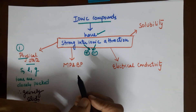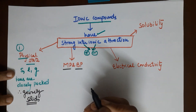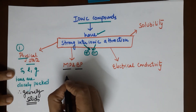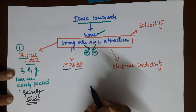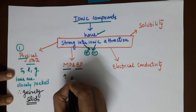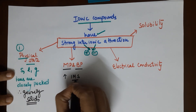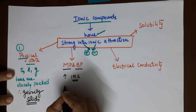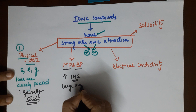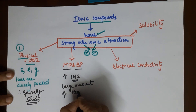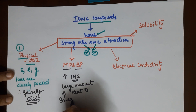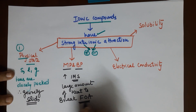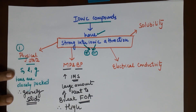The second property is melting and boiling points. This requires breaking the inter-ionic force of attraction, because you need to increase the intermolecular spaces by breaking the intermolecular force of attraction. Since the intermolecular force of attraction is high, you require a large amount of heat to break it. Therefore, the melting and boiling points are very high for ionic compounds.